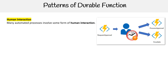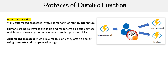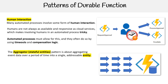We have human interaction. Many automated processes involve some form of human interaction. Humans are not always available and responsive as cloud services, which makes invoking humans in an automated process tricky. Automated processes must allow for this, and they often do so by using timeouts and compensation logic.